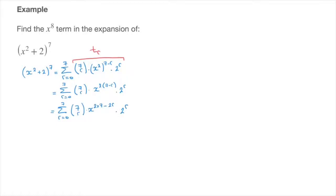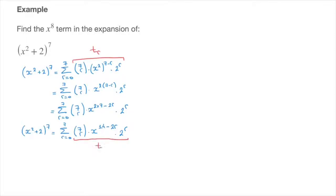Finally, we can state that x squared plus 2 raised to the power of 7 equals the sum from r equals 0 up to 7 of the binomial coefficient 7r times x to the power of 14 minus 2r, multiplied by 2 to the power of r. We've now simplified the general term of our binomial expansion. The general term is tr, which equals the binomial coefficient 7r times x to the power of 14 minus 2r times 2 to the power of r.